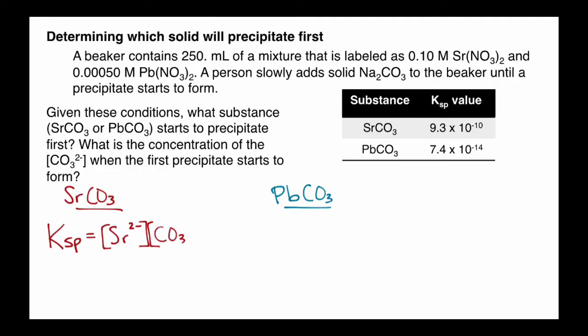So let's take a look at strontium carbonate first. I'm going to set up my equilibrium expression. Ksp equals strontium ions times concentration of carbonate ions. And I know back from the problem, I've got 0.1 molar strontium nitrate. Every strontium nitrate gives one strontium ion. That's a 1 to 1 ratio. And so we will have 0.1 molar strontium ions.